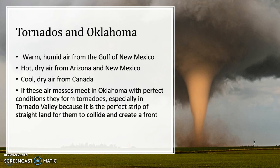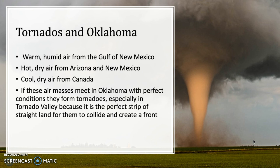Now let's talk about why tornadoes are so common in Oklahoma. We usually get warm humid air from the Gulf of Mexico, hot dry air from Arizona and New Mexico, and cold dry air from Canada. If these air masses meet in Oklahoma under perfect conditions, they will form tornadoes. Because we have a perfect strip of flat land called Tornado Alley, they usually collide and create a front there, as it is a perfect condition for them to meet.